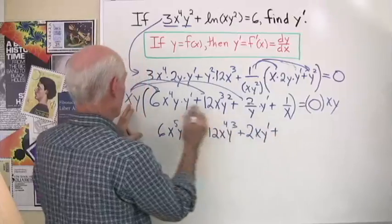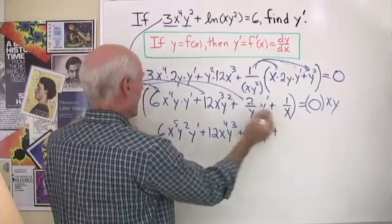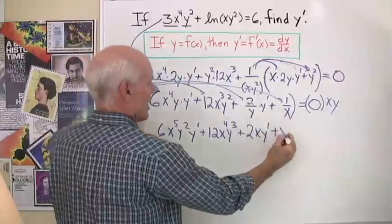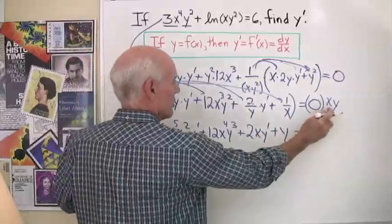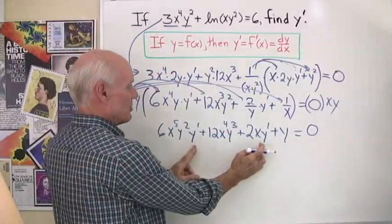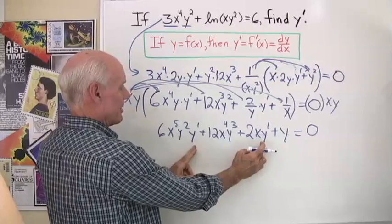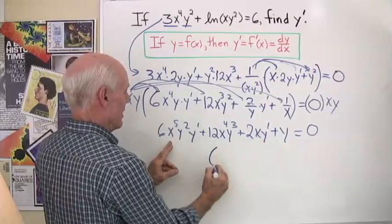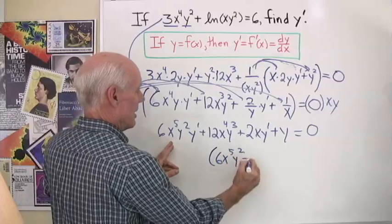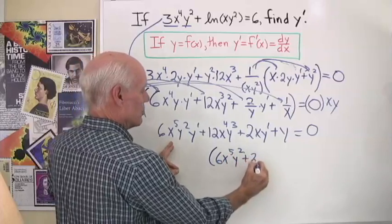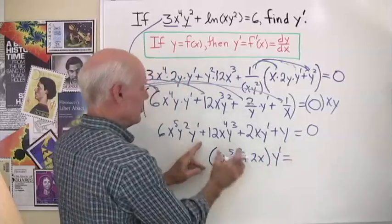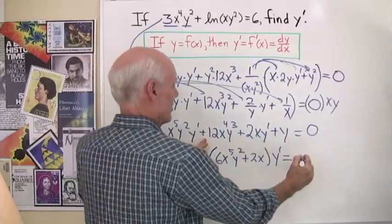Then xy times 1 over x — the x's divide out — gives just y, which equals 0 times xy, still 0. Now I'll collect the terms with y prime and factor it out: 6x to the fifth y squared plus 2x, all times y prime, equals the remaining two expressions moved to the other side.